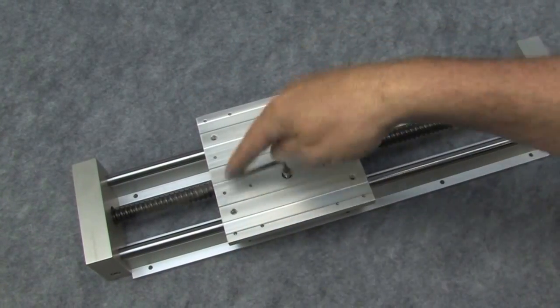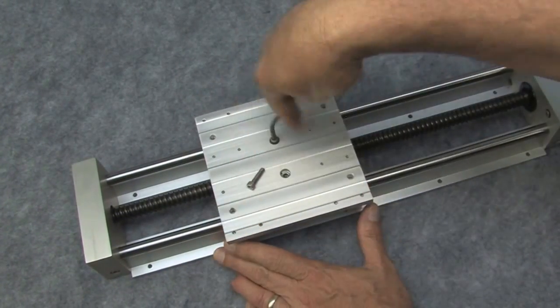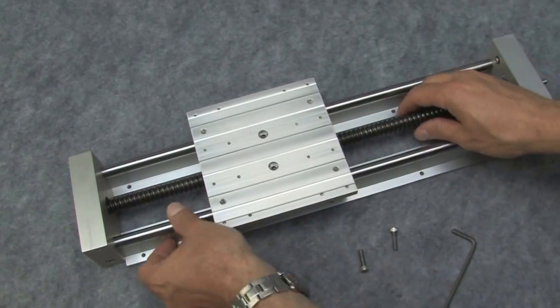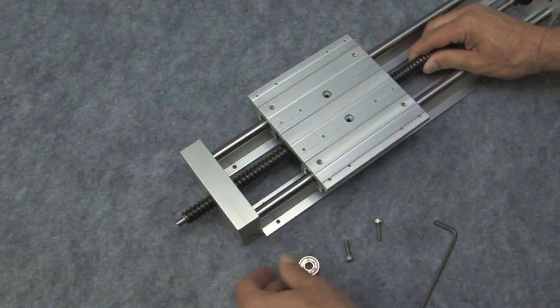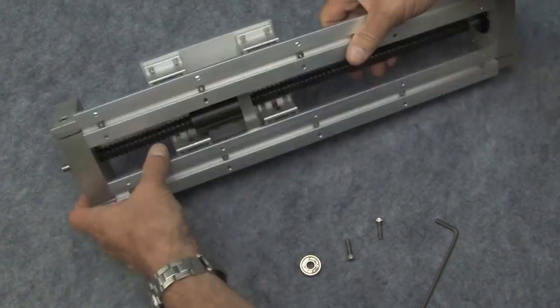Remove the two screws from the carriage to release the drive screw nut. Push the end plate bearing out and remove the bearing. Remove the ball screw from the base.